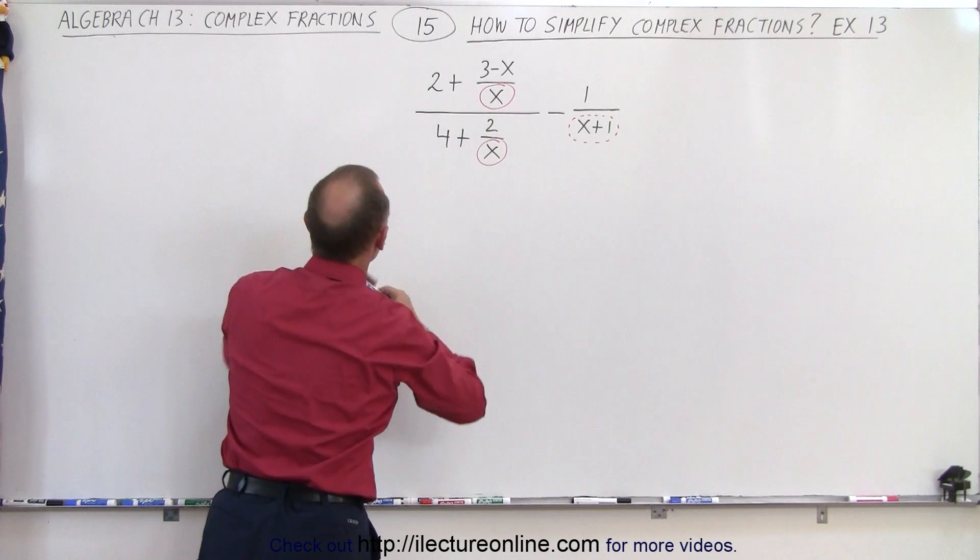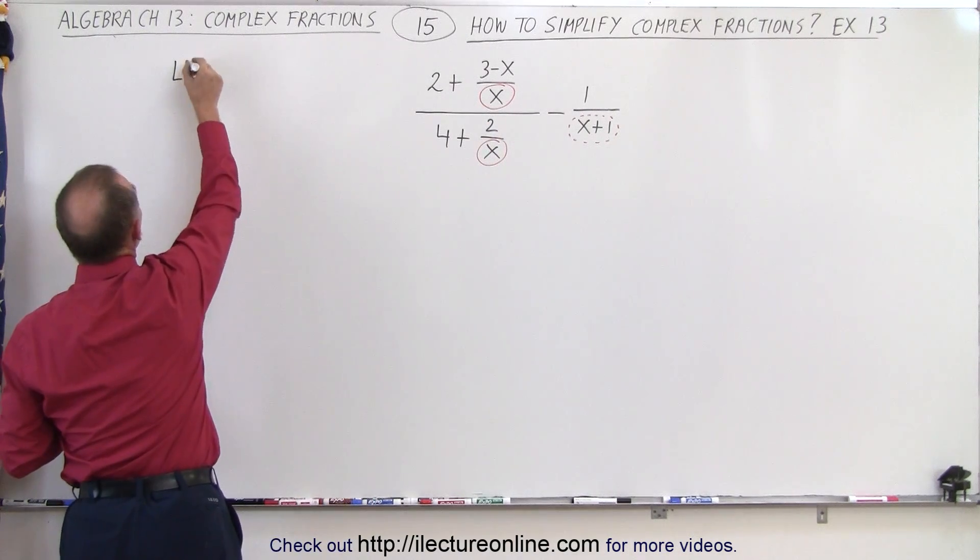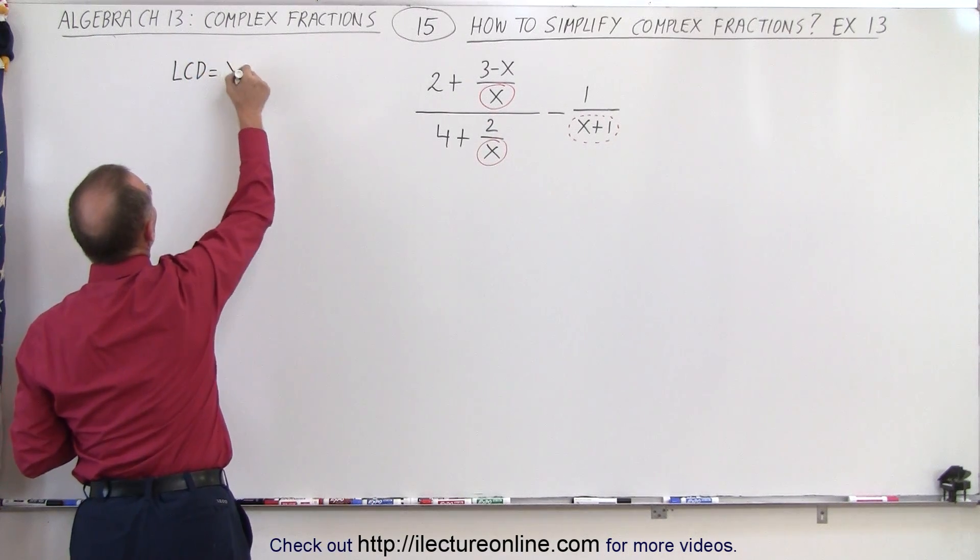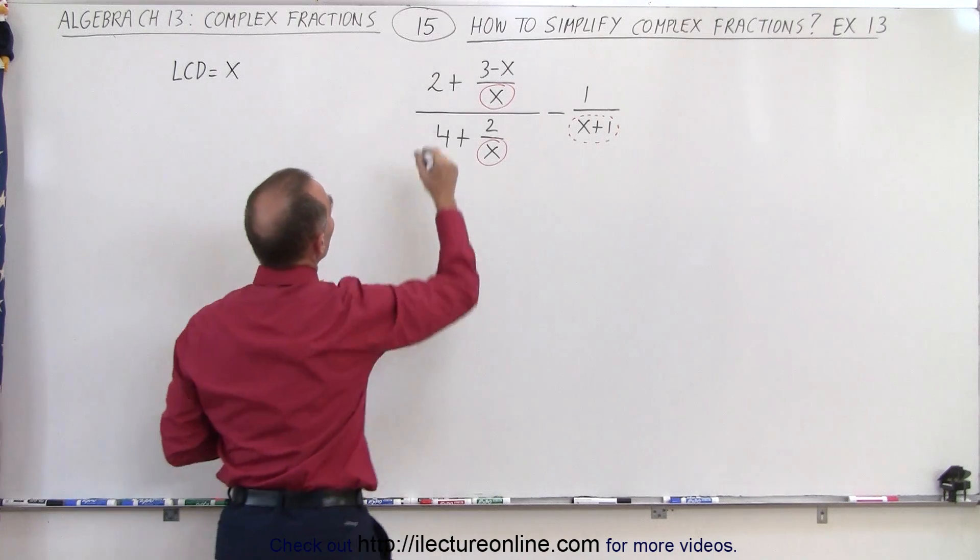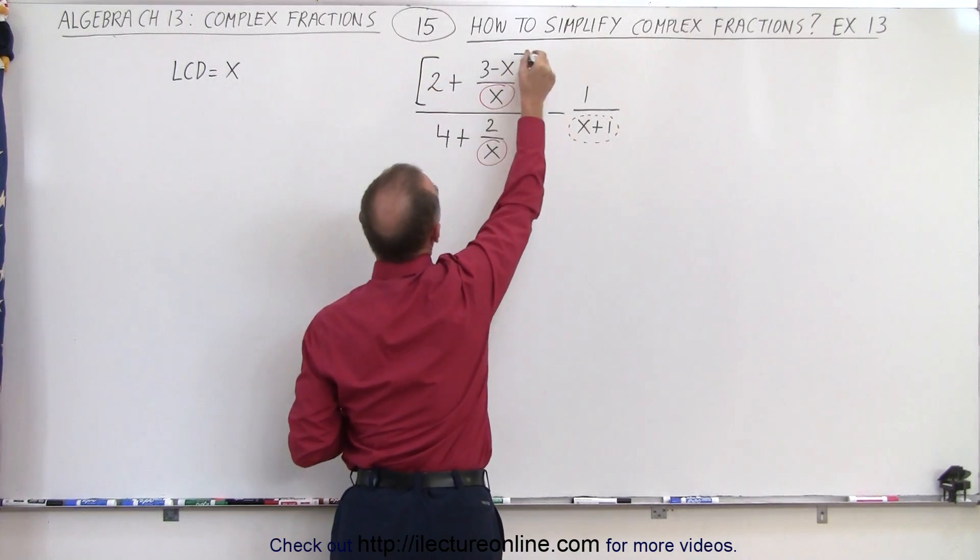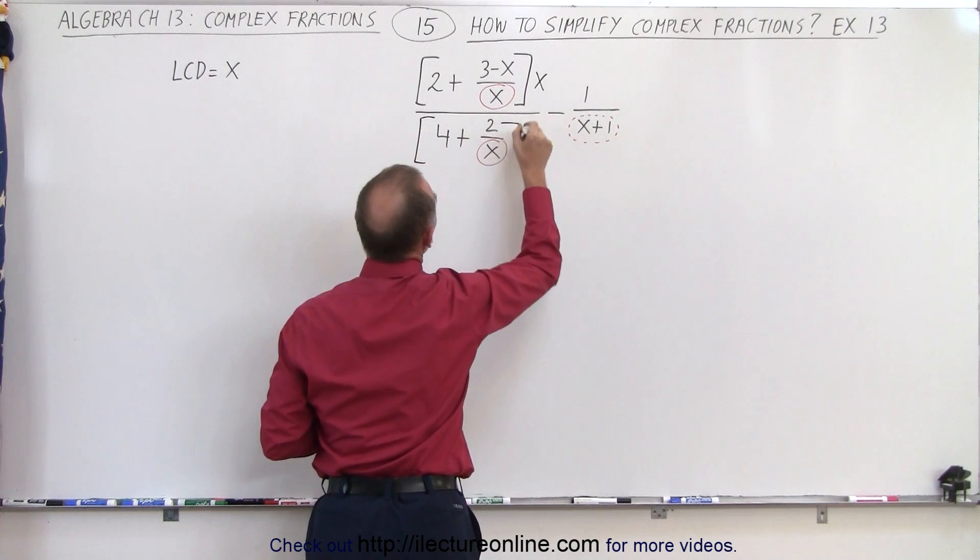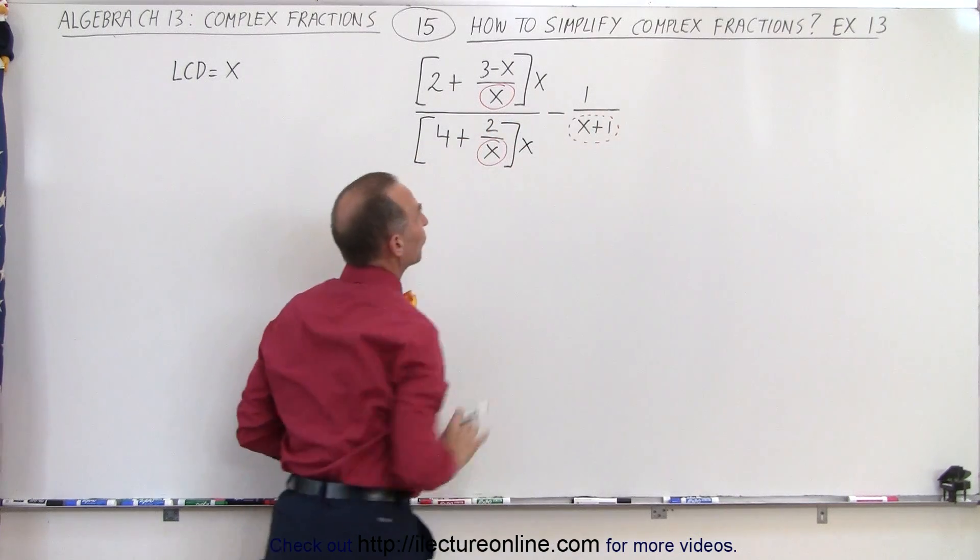In this case we're going to only concentrate on that part and then say that the LCD is simply equal to x, which means we're going to multiply this numerator by x and we're going to multiply this denominator by x and leave that alone for now.